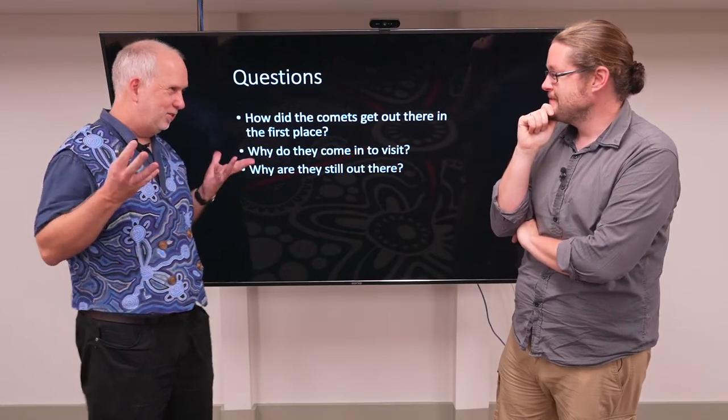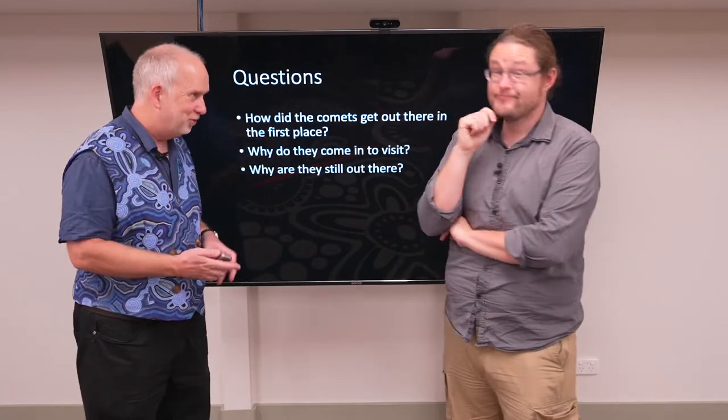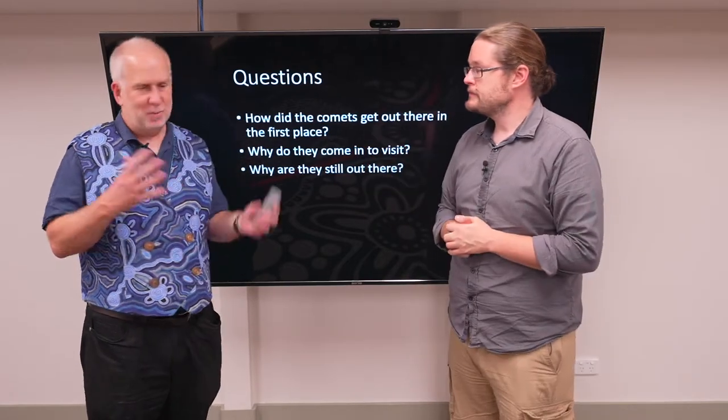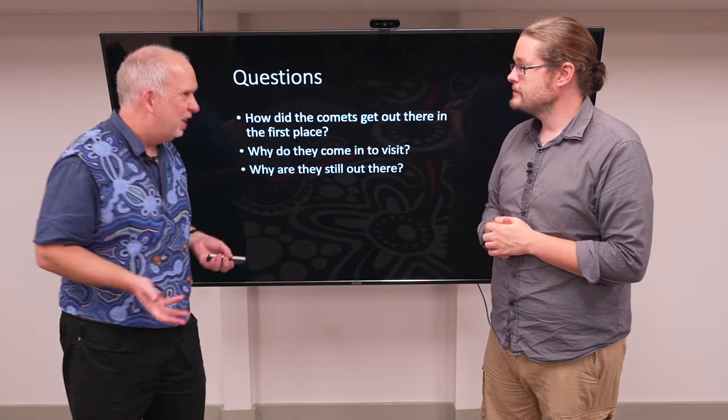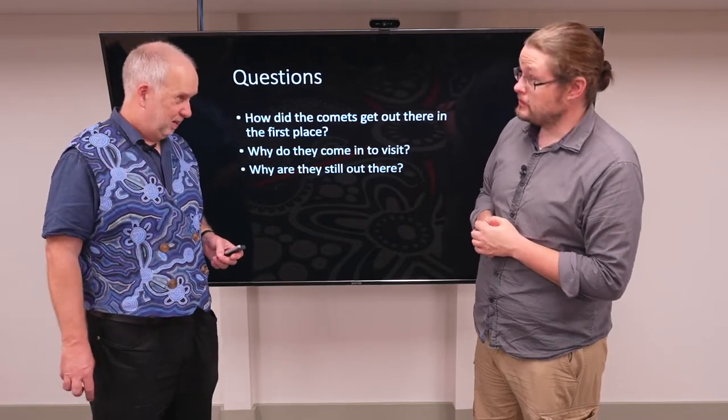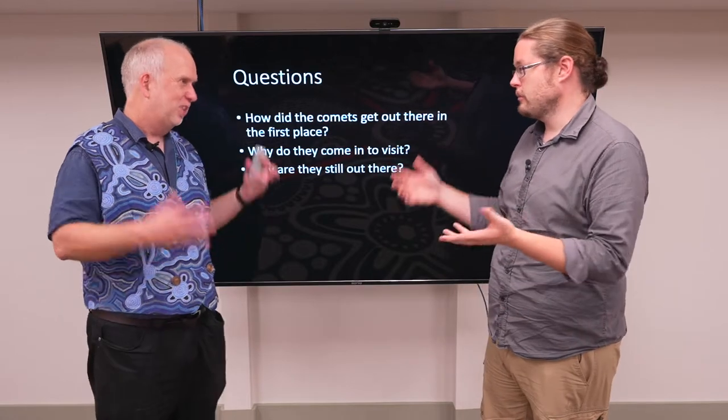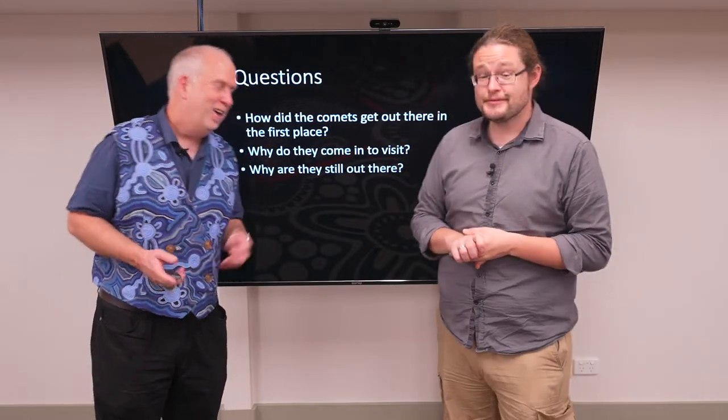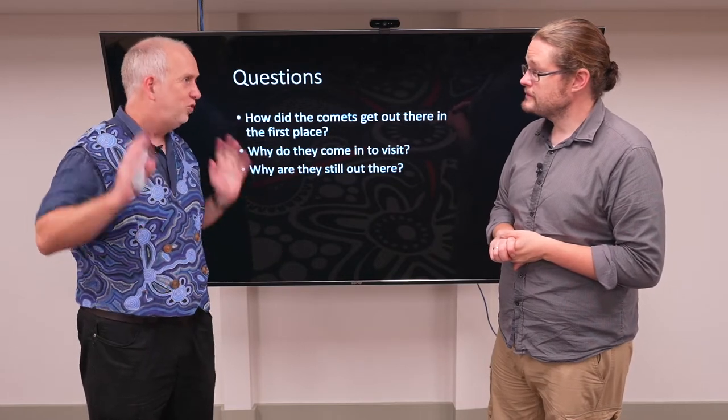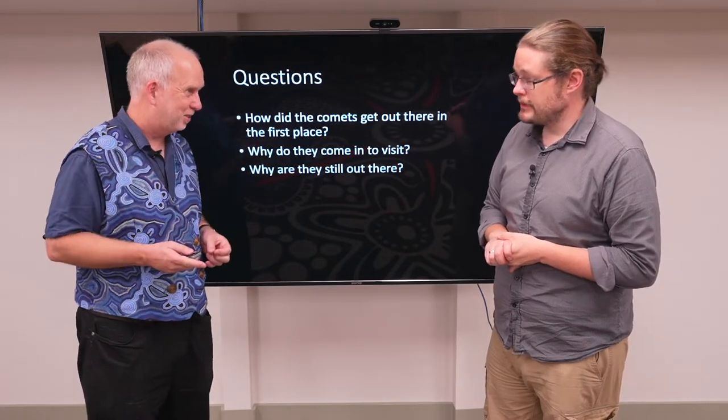Yeah, so this Oort cloud is the most hypothetical bit of the solar system. Because obviously we can't see it out there, right? Estimates are it contains between 10 to the 11 and 10 to the 12 comets more than a kilometer in size. The best estimates actually come from some of my own research. And it's very, very uncertain. Because we don't see the Oort cloud, all we see is these things coming in to visit us.